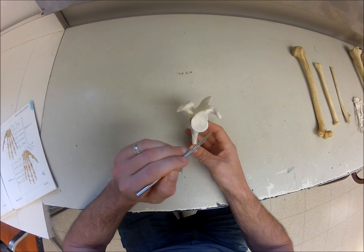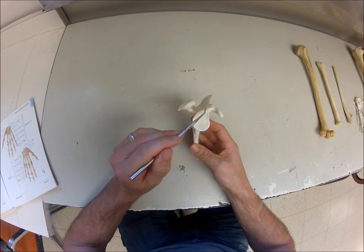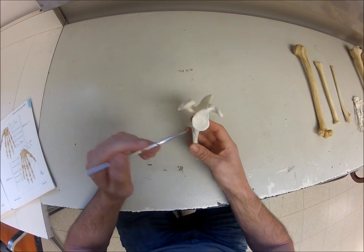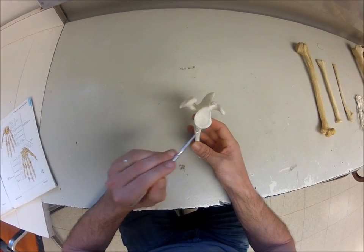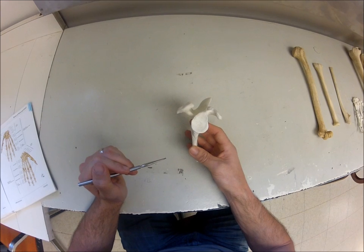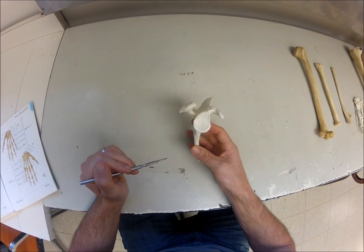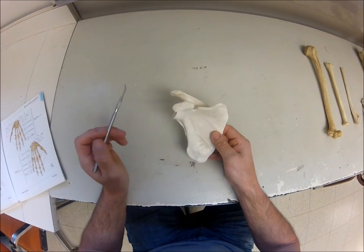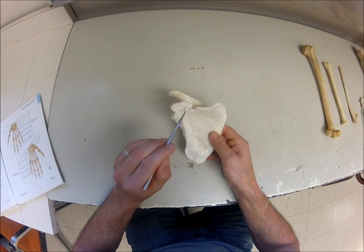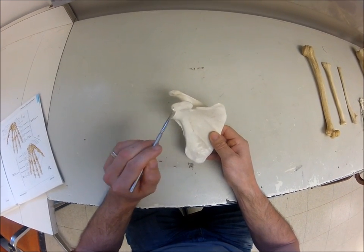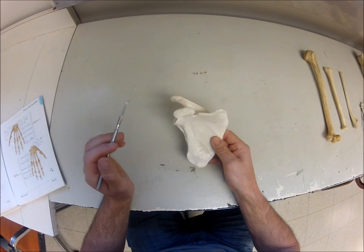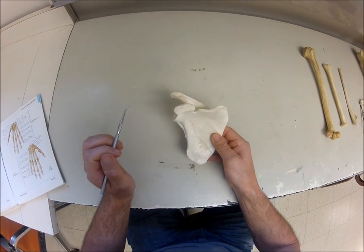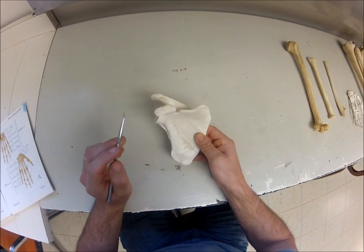If we turn the scapula so we're looking at the lateral aspect, we can see here would be the glenoid fossa. At the very top would be the supraglenoid tubercle, and at the very bottom would be the infraglenoid tubercle. Looking over here on the anterior side, we can see this process sticking out, which would be the coracoid process.